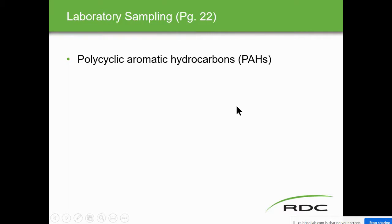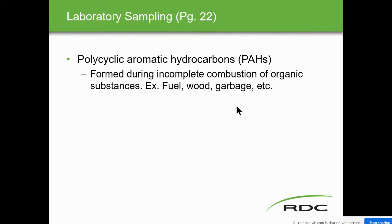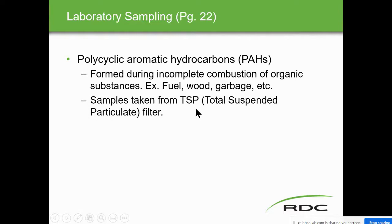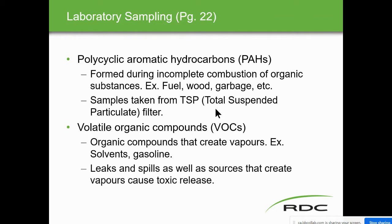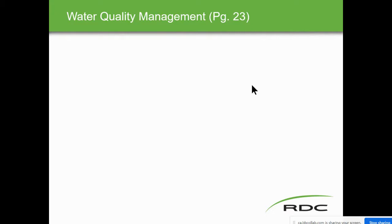Laboratory sampling: polycyclic aromatic carbons (PACs) form during incomplete combustion of organic substances — fuel, wood, garbage. Samples are taken using a total suspended particulate filter. Volatile organic compounds — VOCs — are organic compounds that create vapors. Solvents and gasolines are examples. Benzene and toluene are very harmful VOCs. Leaks and spills, as well as sources that create vapor, cause toxic release.